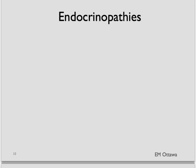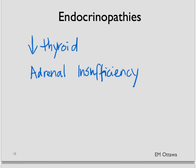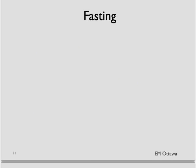Next, endocrinopathies. They include hypothyroidism, adrenal insufficiency, and really rare causes such as insulinoma — where your body is basically producing way more insulin than you need. The third category is fasting: simply, the patient has run out of fuel, and depending on the patient's reserve, sometimes a short fast can produce hypoglycemia in them.